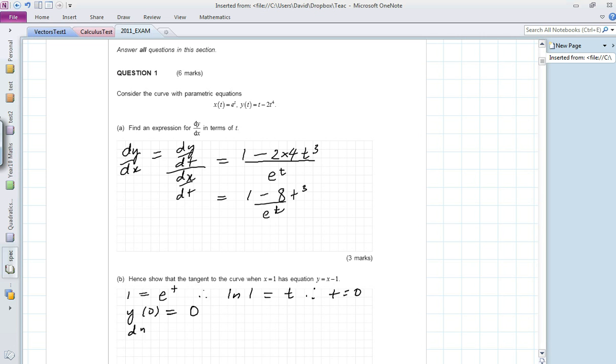And dy/dx when t equals 0 is going to be 1 minus 8 times 0³, over e^0, which equals 1 over 1, which equals 1.